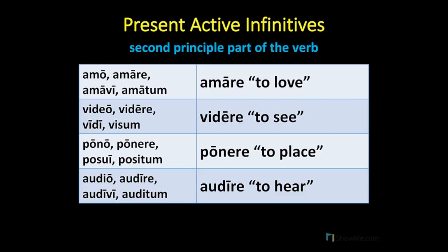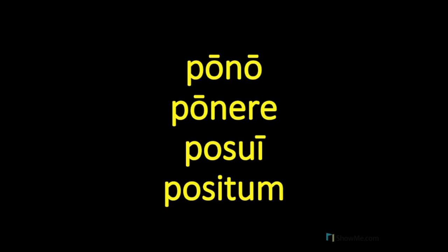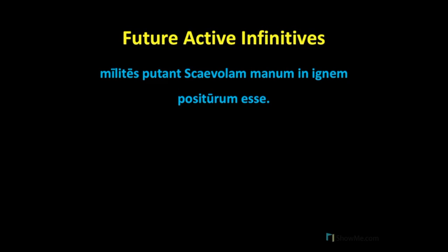As we prepare to look at the future active infinitive, let's focus on these principal parts. Pono ponere posui positum, from the verb 'to place.' See if you can figure out which principal part we're using to create the future active infinitive. Here is our example sentence: Milites putant Scaevolam manum in ignem positurum esse. Putant is our main verb, milites is the subject, Scaevolam is the accusative subject of the indirect statement, manum is the direct object, in ignem is a prepositional phrase, and positurum esse is our future active infinitive.